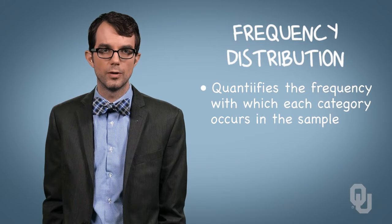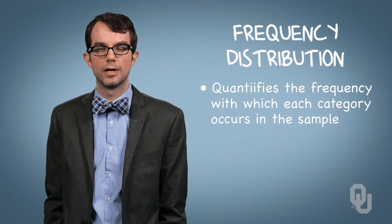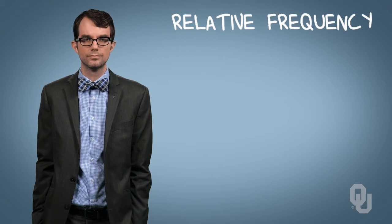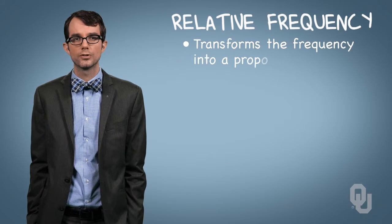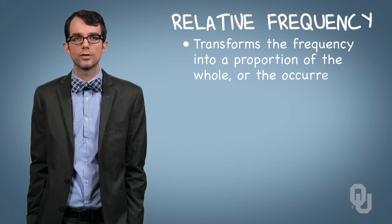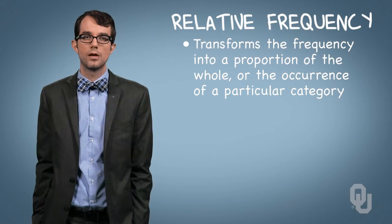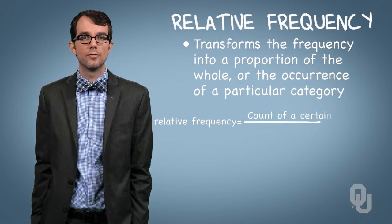We can provide a tally view of the frequency of each category, or we can just provide the final frequency. Sometimes raw numbers — in this case the raw number of occurrences of each category — aren't as illustrative as the relative frequency of each category. The relative frequency transforms the frequency into a proportion of the whole, or the occurrence of a particular category relative to all other categories. We find the relative frequency by dividing by the sum of observations.